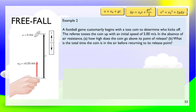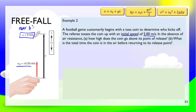Next problem: a football game begins with a coin toss. The referee tosses the coin up with an initial speed of 5 meters per second. In the absence of air resistance, how high does the coin go above its point of release, and what is the total time the coin is in the air before returning to its release point? Here is the illustration: this is the initial speed, and remember, at the maximum height, the velocity is zero, even if not stated in the problem. We are looking for the maximum height.